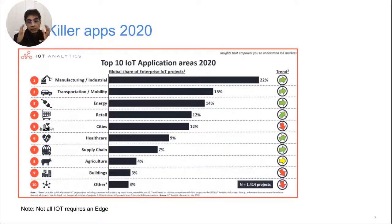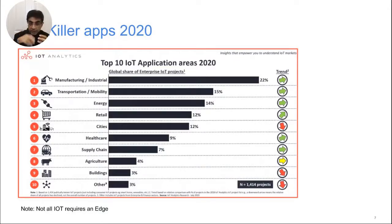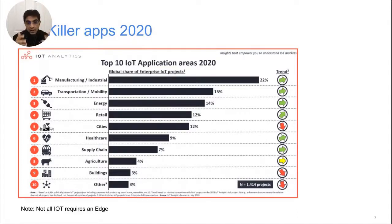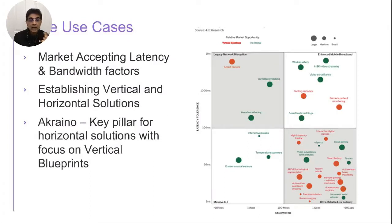From an IoT-only perspective, I want to clarify: not all IoT requires an edge, and not all edge is IoT. A sensor that wakes up and dumps data once a week is not an edge application. From an IoT perspective, manufacturing, industrial, transportation, energy, and retail are the top growing markets. Smart cities and buildings are not growing primarily because of pandemic concerns.